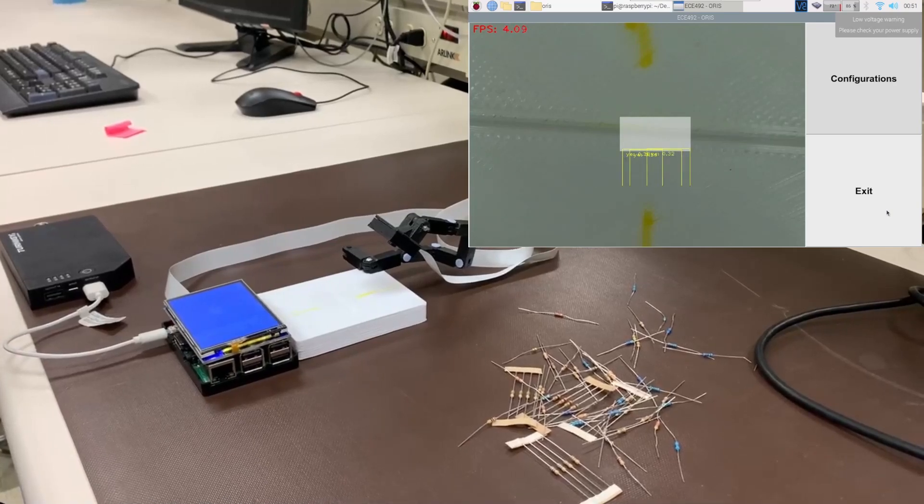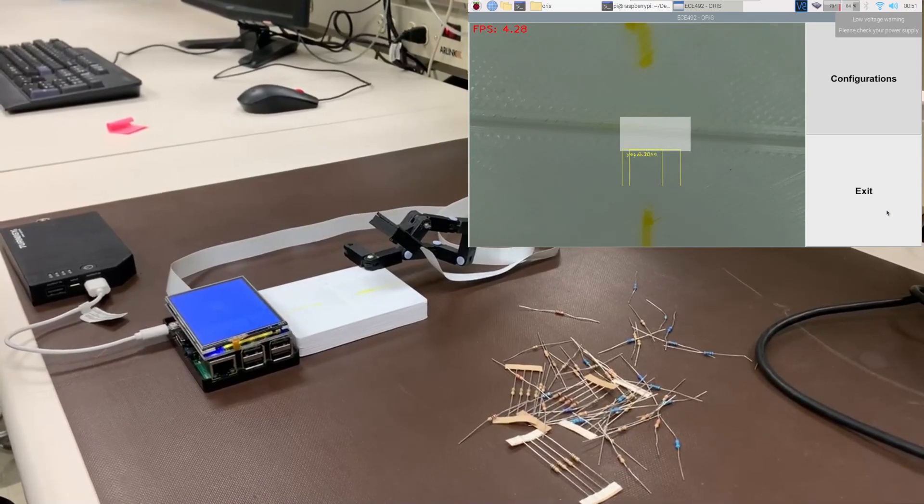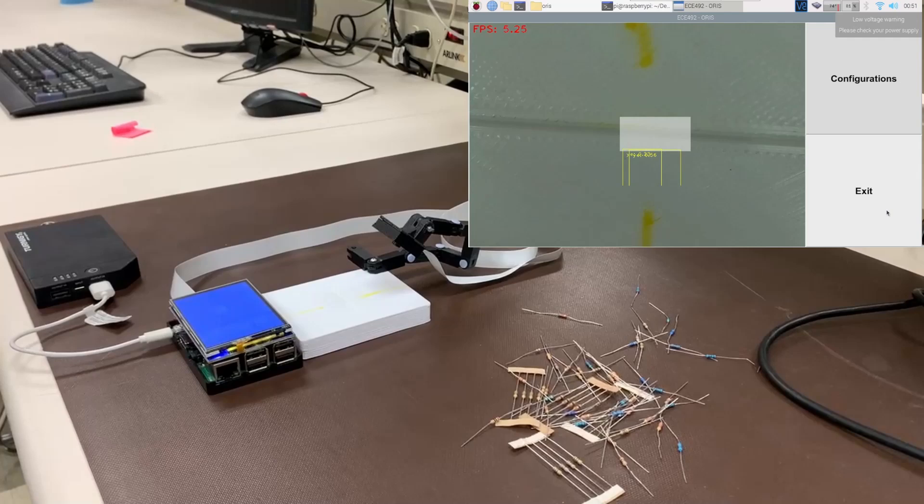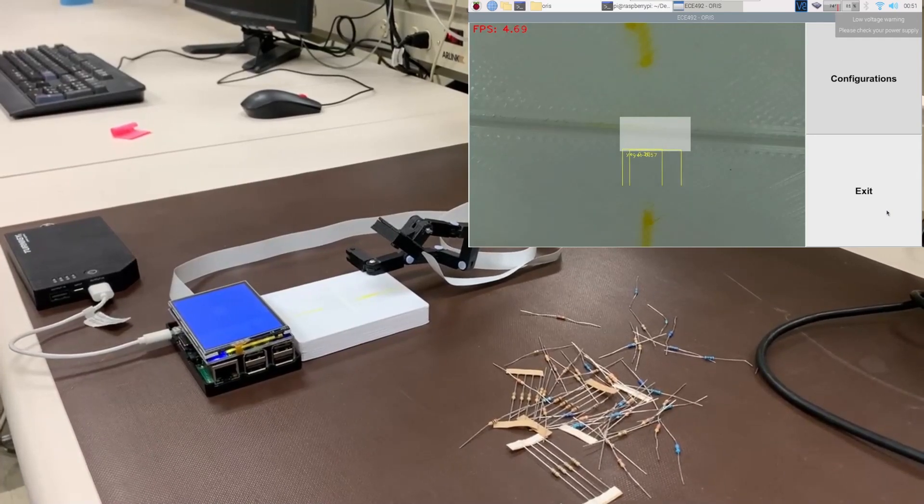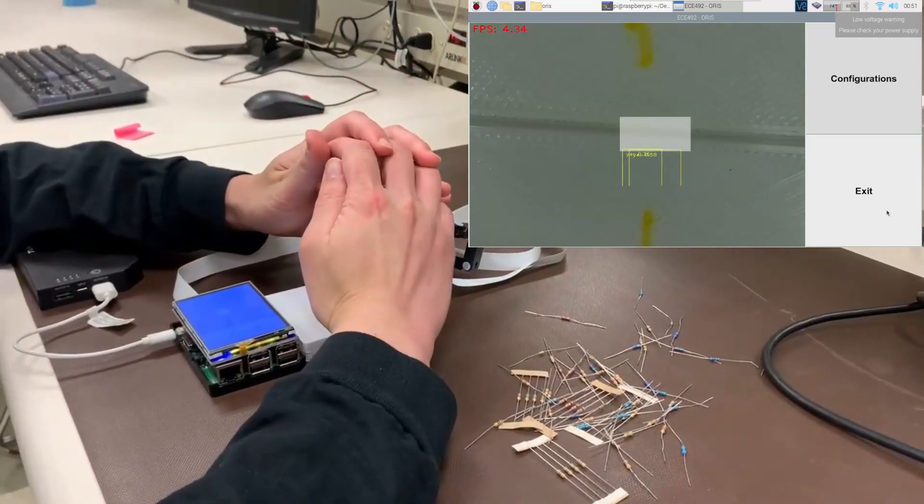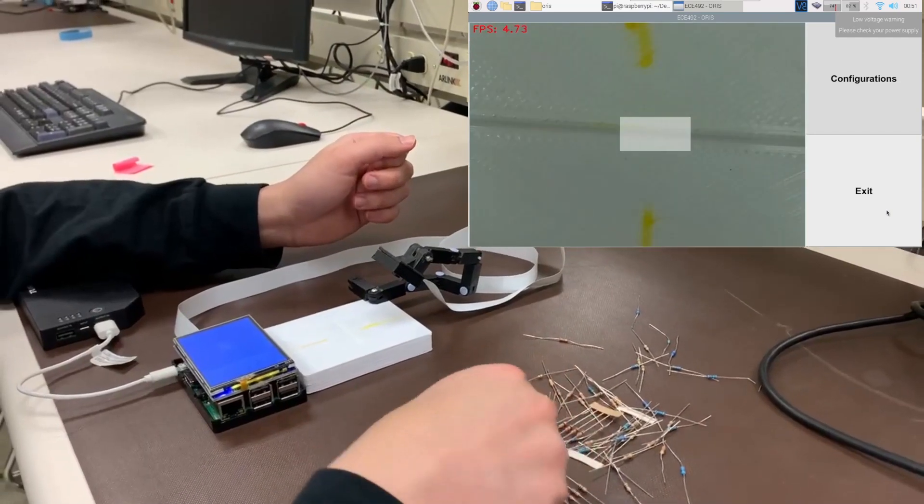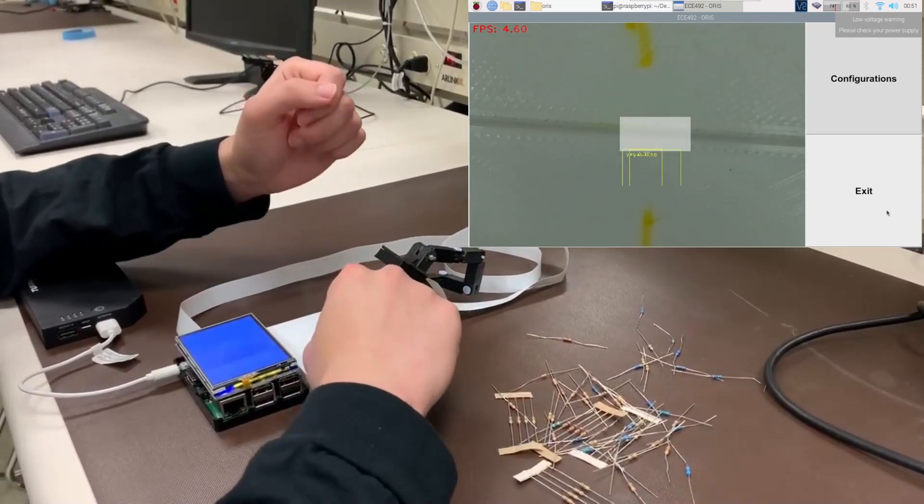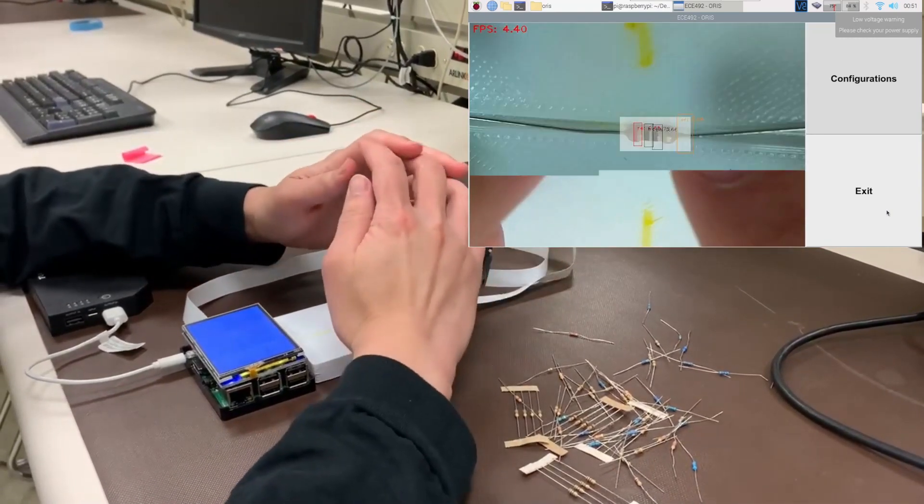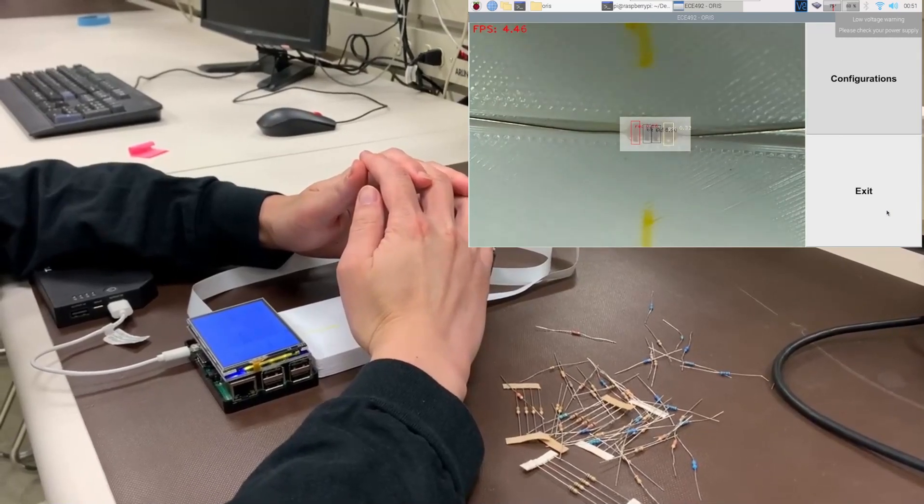Thank you, Dongxiao. Now we will see if the system is able to detect the resistor correctly in a more complex environment. For example, when the environment has low intensity light or some other interference. Here, we will simulate a low light environment by covering up the ORIS camera. Now we place the resistor on the platform as usual. We can see the ORIS system is trying to detect the resistor bands. Due to the poor light source in the room, the ORIS is struggling to identify the color bands.